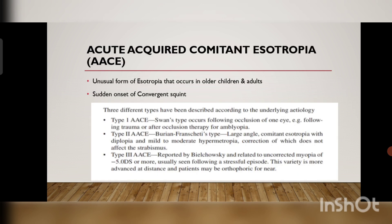Now coming to one of the rare forms of esotropia — that is acute acquired comitant esotropia, commonly known as AAC. This is a very unusual form of esotropia that occurs in children and adults, and there is a sudden onset of convergent squint. Sometimes we see that the child is mostly engrossed in mobile phones or electronic gadgets and holds the mobile phone very near to the eyes.